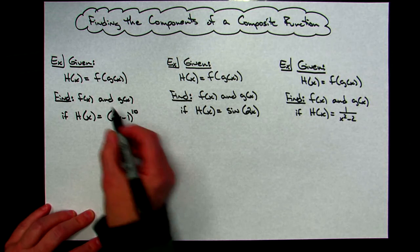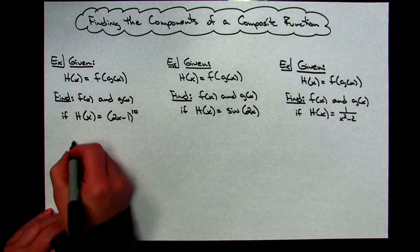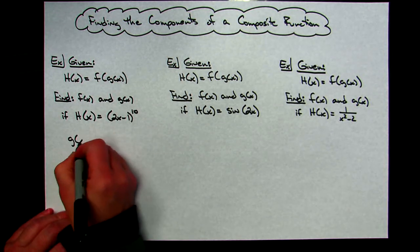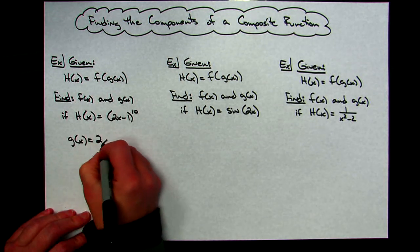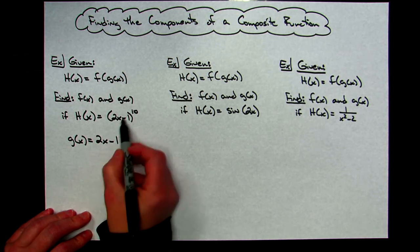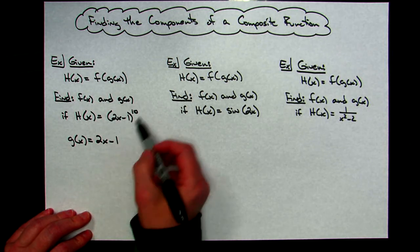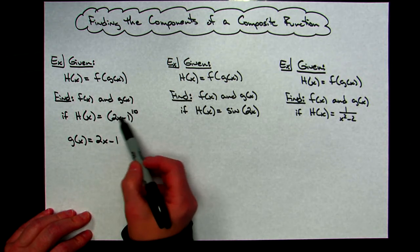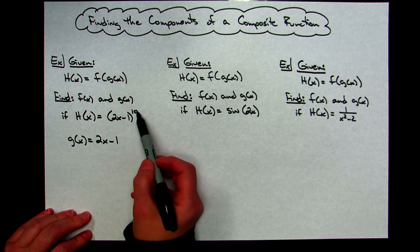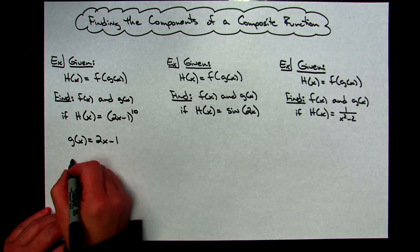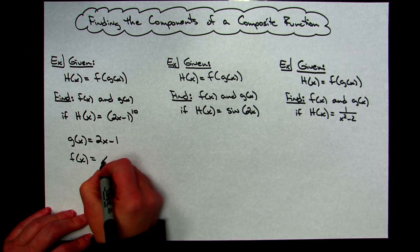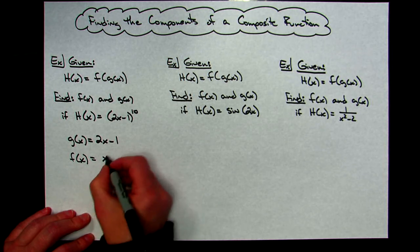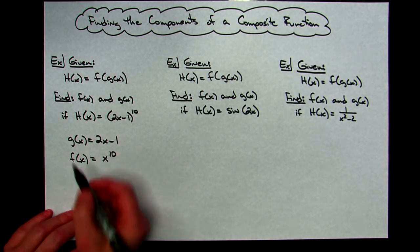Well if that's the inside, then I'm going to let g of x equal that. So then my g of x function is going to be that 2x minus 1. If this is the inside, then what's the outside? Well the outside is whatever the inside is being raised to the tenth power. So then my f of x is going to be that object that we put on the inside raised to the tenth power.